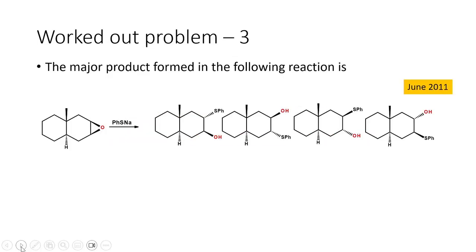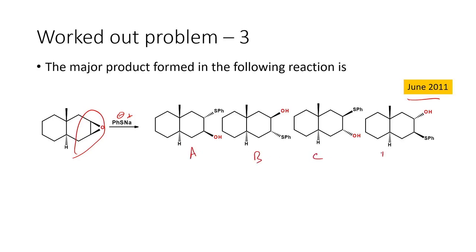Let us move on to the next problem, which appeared in June 2011. The major product formed in this reaction — an epoxide is given, similar to the first case, with a thiolate anion that opens up this epoxide ring. We have four different products A, B, C, and D. In product A, the epoxide oxygen retains its stereochemistry — it is above the plane and retained in the final product.